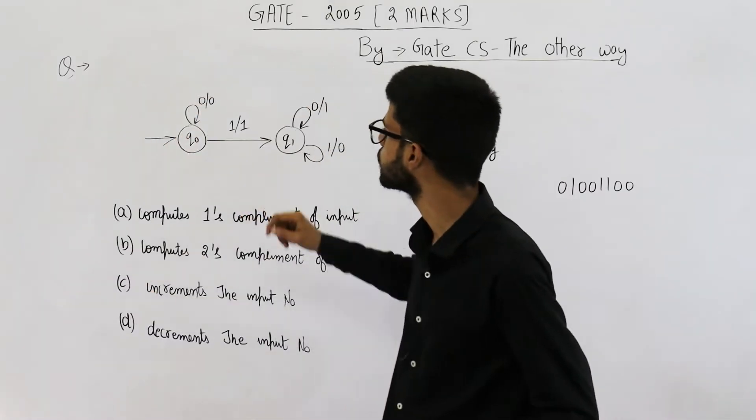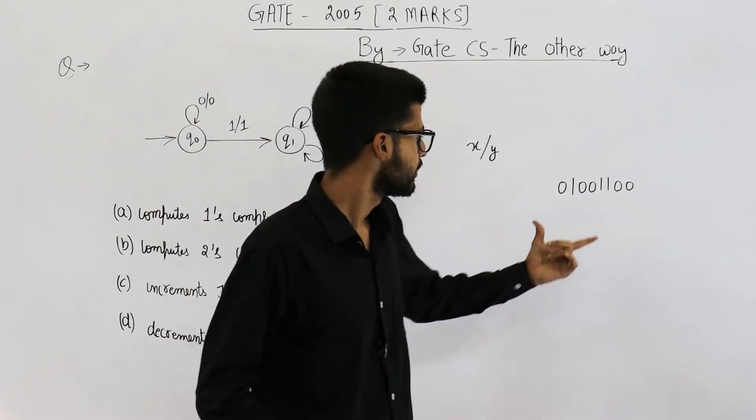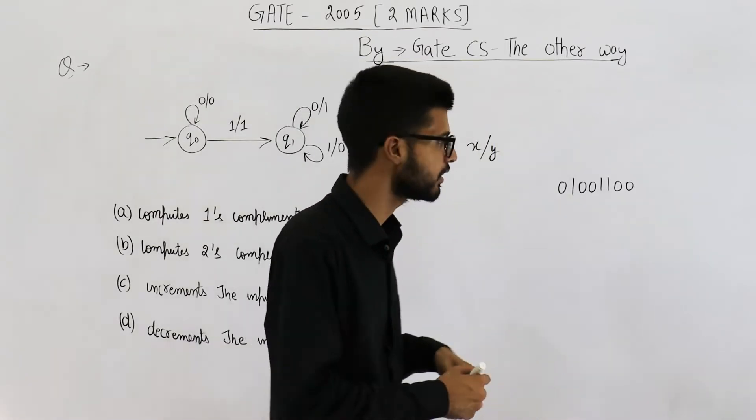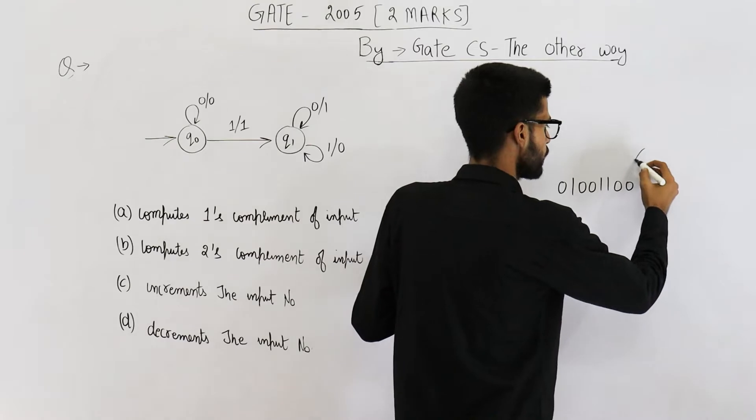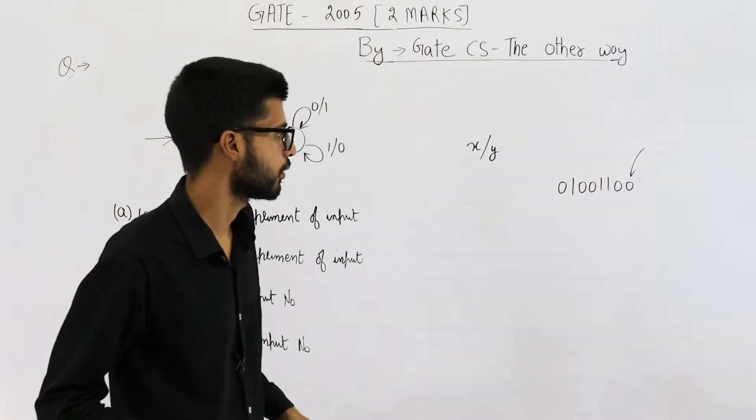This finite state machine takes input in reverse order. That means this input string is given starting from this bit. We start the input from least significant bit.